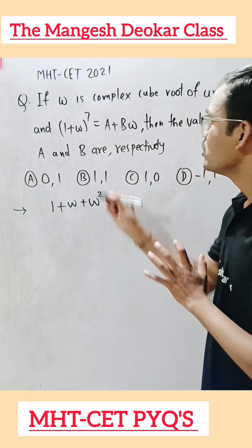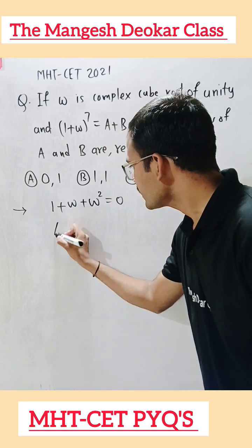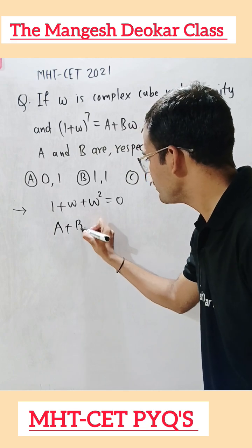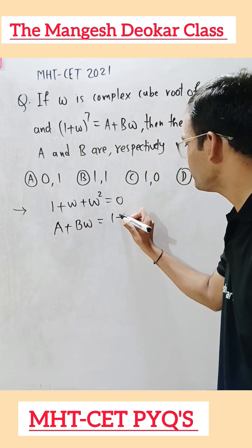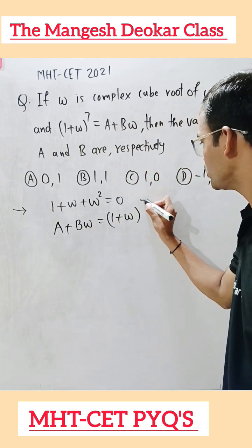Let us write the given expression: a + bω = (1 + ω)^7.